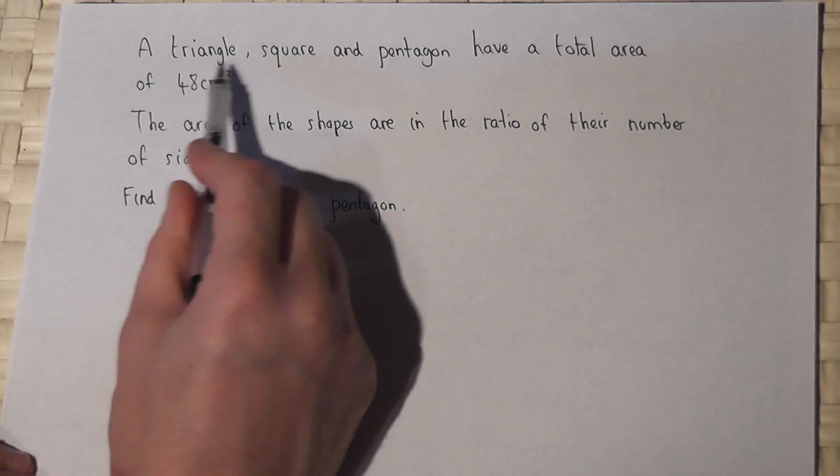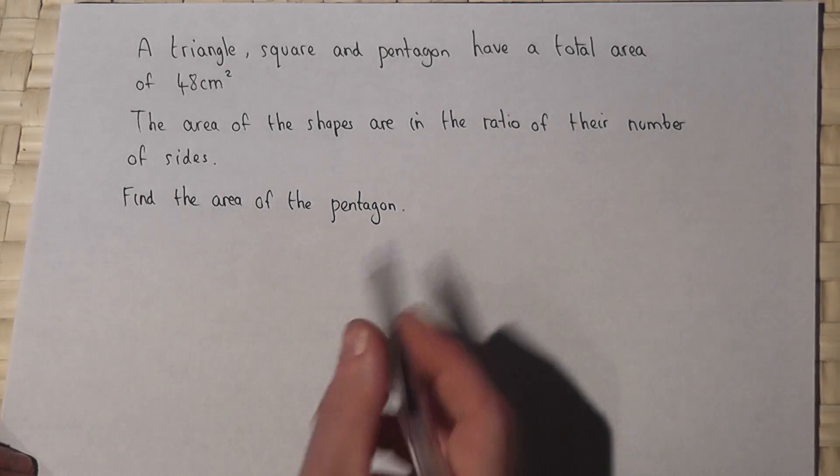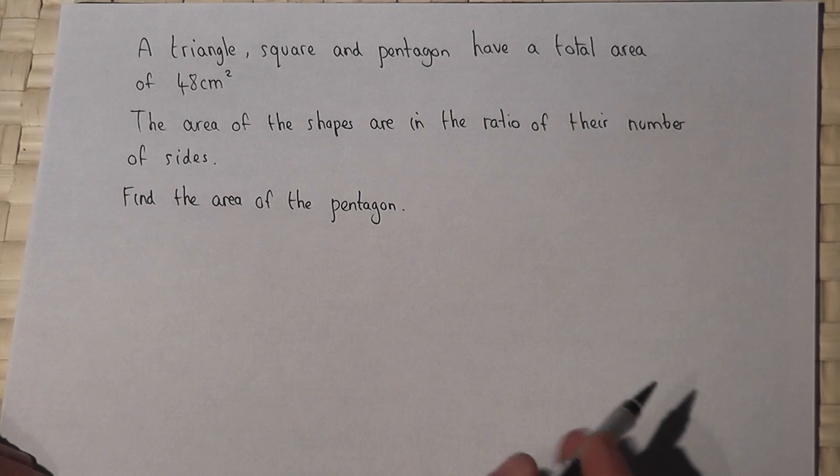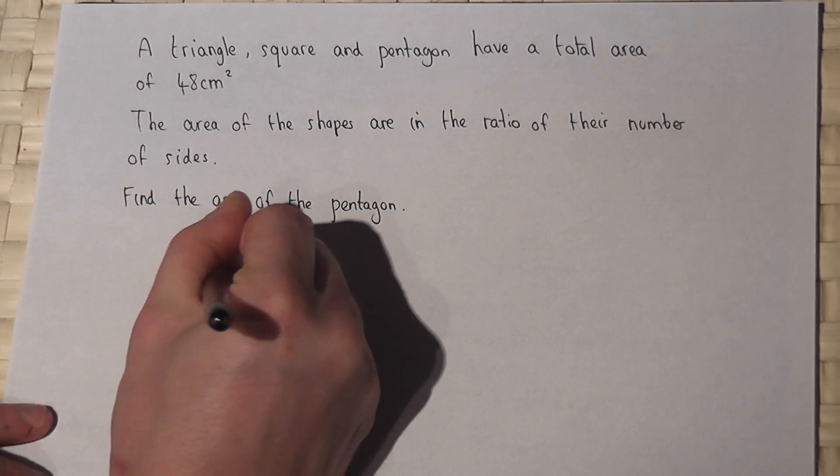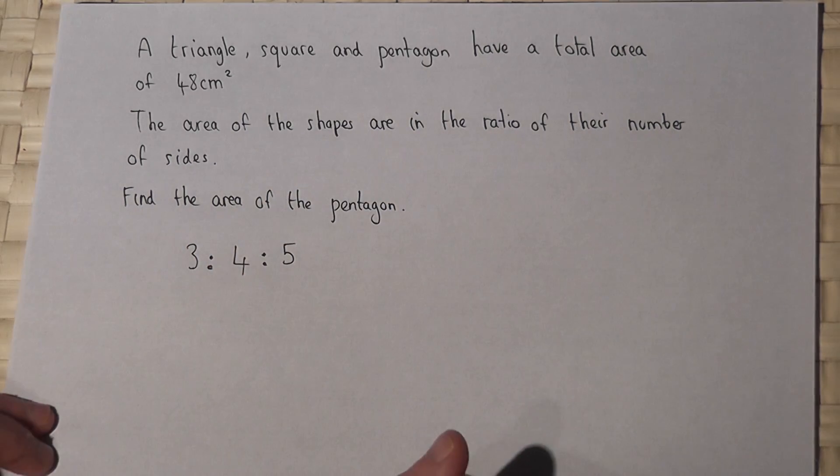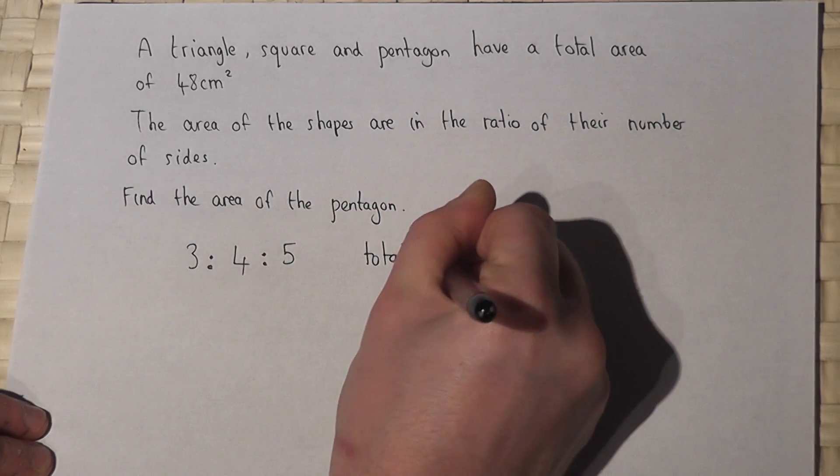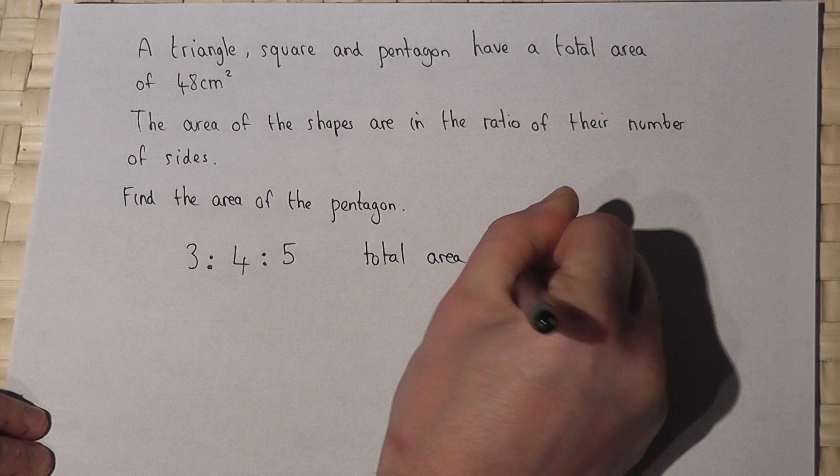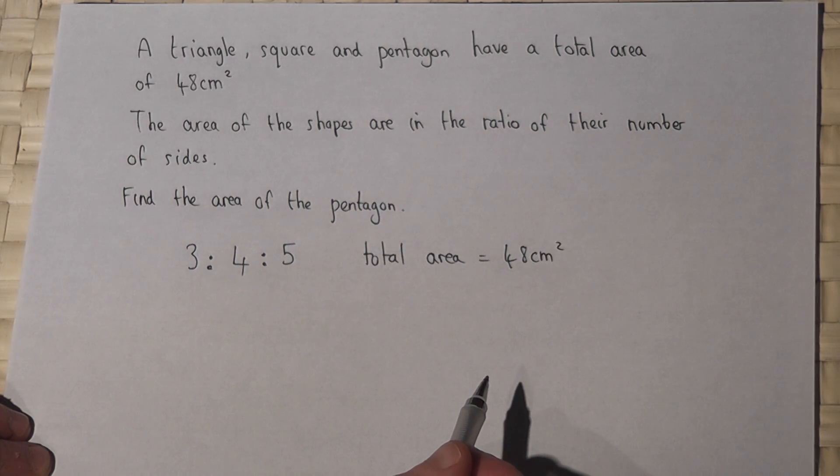And the area of each of the individual shapes is in the ratio of the number of sides. So therefore the ratio must be 3 to 4 to 5. And the total area is 48. What is the area of the pentagon?